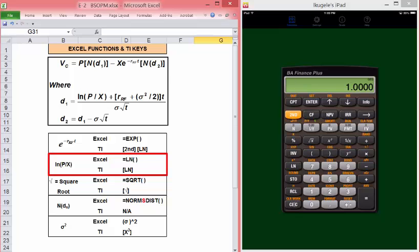We also need to use the natural log function. In Excel, this is equal LN. In the TI, it's the key to the left of 7. We'll also need to take the square root of a value. In Excel, this is the equal SQRT function.